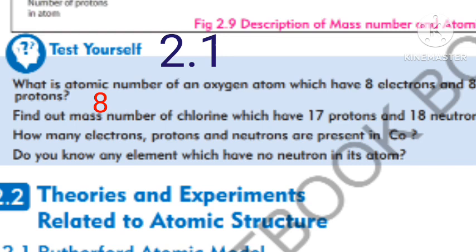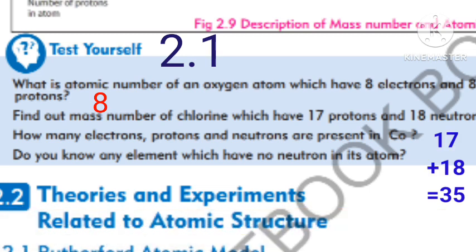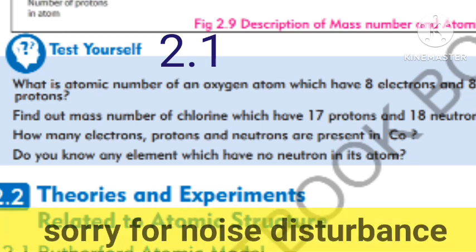The next question is: find the mass number of chlorine, which has 17 protons and 18 neutrons. When you add them together it will be 35, so the mass number is 35.